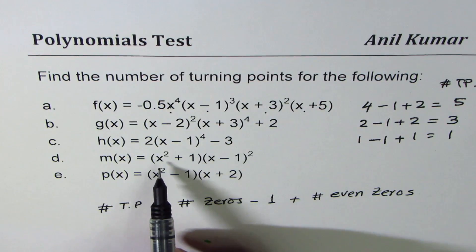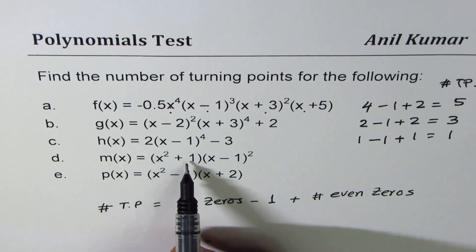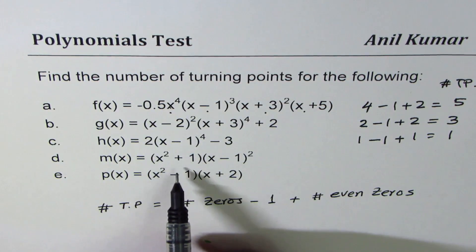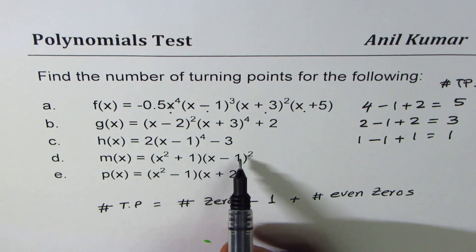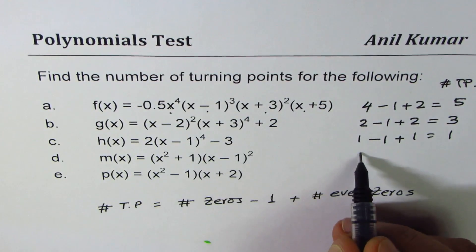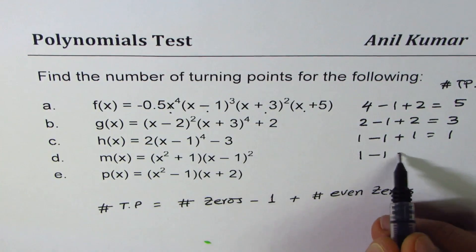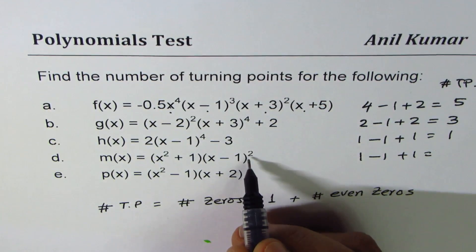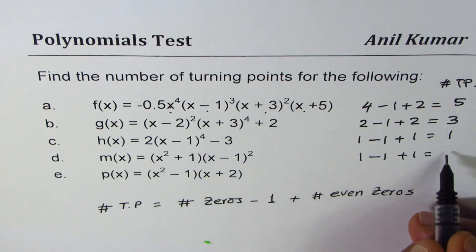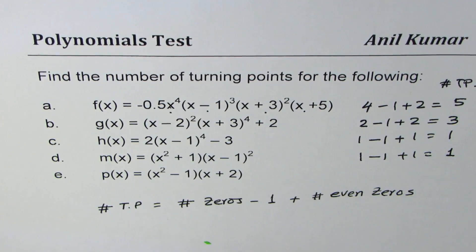Now here, x² + 1 is not a zero, not a real zero. x - 1 is a zero, so we have 1 zero minus 1 plus 1 for a number of even zeros, so what we have here is again 1 turning point.